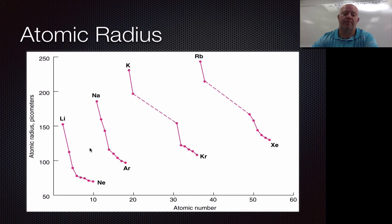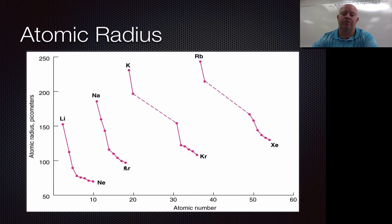Now if you look at the chart and take just the alkali metals — lithium, sodium, potassium, and rubidium — you'll see that lithium is the smallest and they tend to get bigger as you go down the periodic table. Moving down from one energy level to the next, you tend to get bigger every time. That same pattern holds true across the whole table, so xenon would be the biggest noble gas of the four shown, and we'd expect cesium to be bigger than rubidium and francium bigger still.